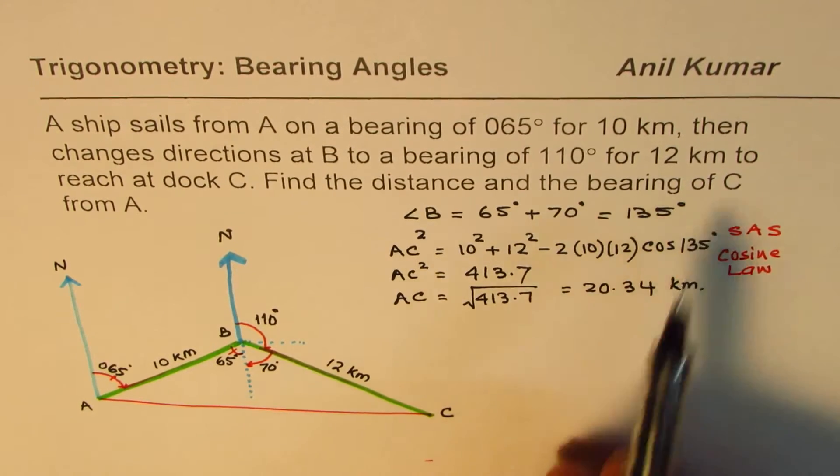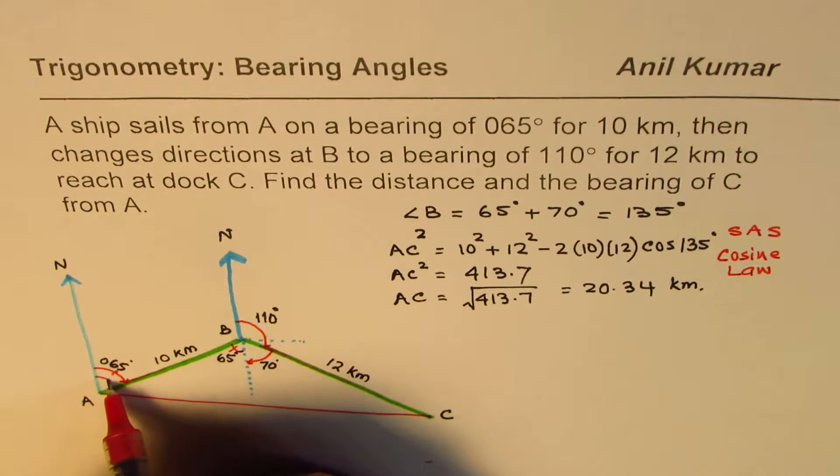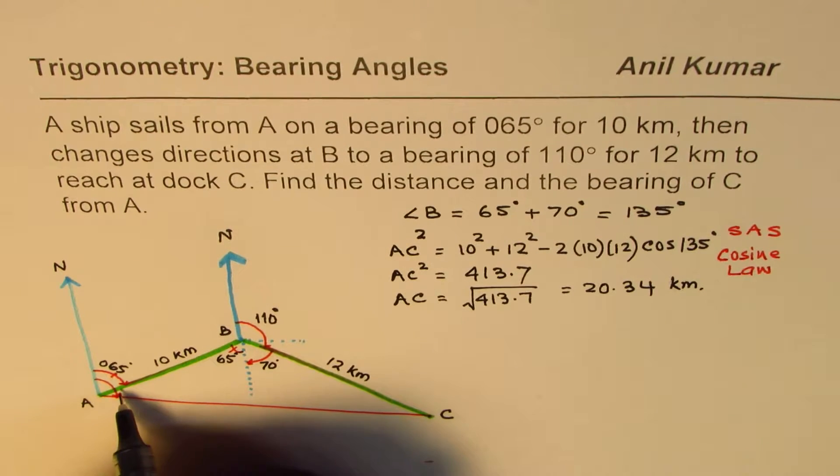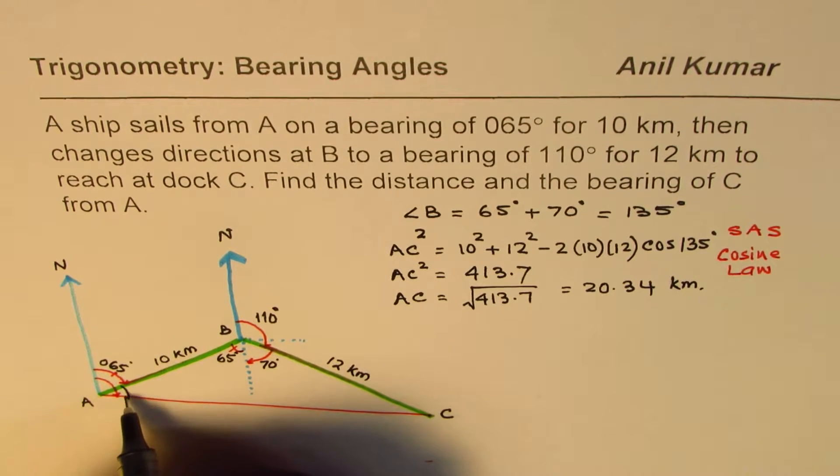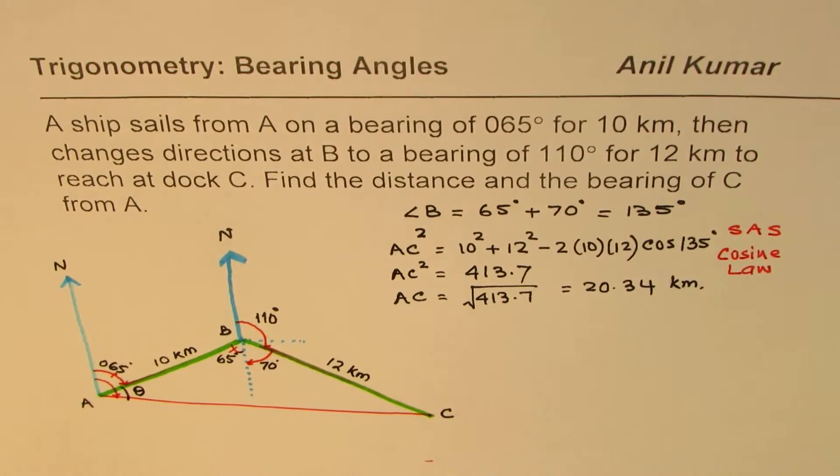Now we need to find bearing of angle C. That means from A, bearing of angle C. So that is to say that we need to find the angle which is kind of this much. So that is the angle we need to find. Now this angle is sum of two angles, 65 plus that. Let's call this angle as theta.